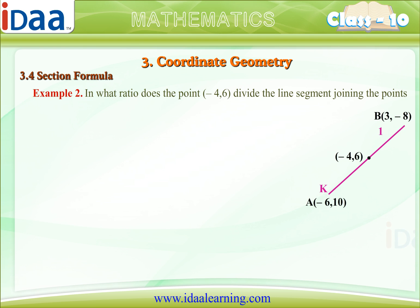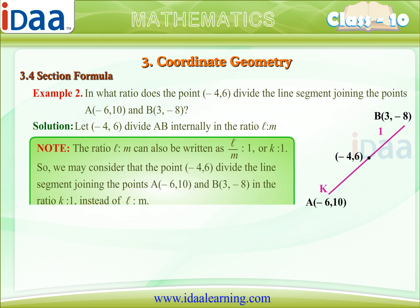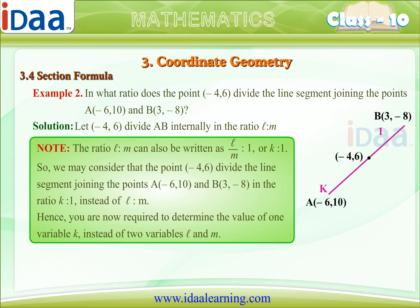In what ratio does the point (-4,6) divide the line segment joining the points A(-6,10) and B(3,-8)? Let (-4,6) divide AB internally in the ratio L is to M. Note that the ratio L is to M can also be written as L by M is to 1 or K is to 1.